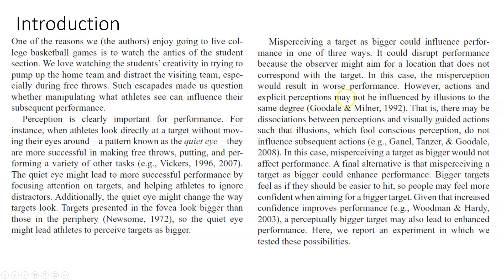'Misperceiving a target as bigger could influence performance in one of three ways: it could disrupt performance because the observer might aim for a location that does not correspond with the target — the misperception results in worse performance. However, there may be dissociations between perceptions and visually guided actions such that illusions which fool conscious perception do not influence subsequent actions — in that case, misperceiving a target as bigger would not affect performance. A final alternative is that misperceiving a target as bigger could enhance performance — bigger targets feel easier to hit, so people may feel more confident.'